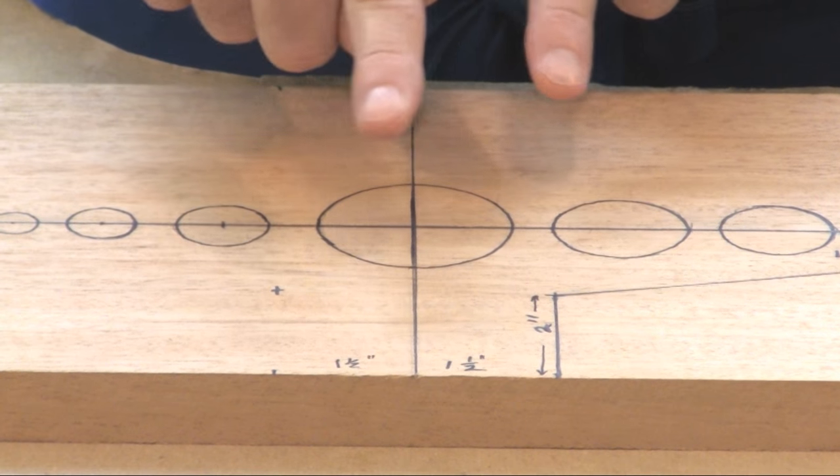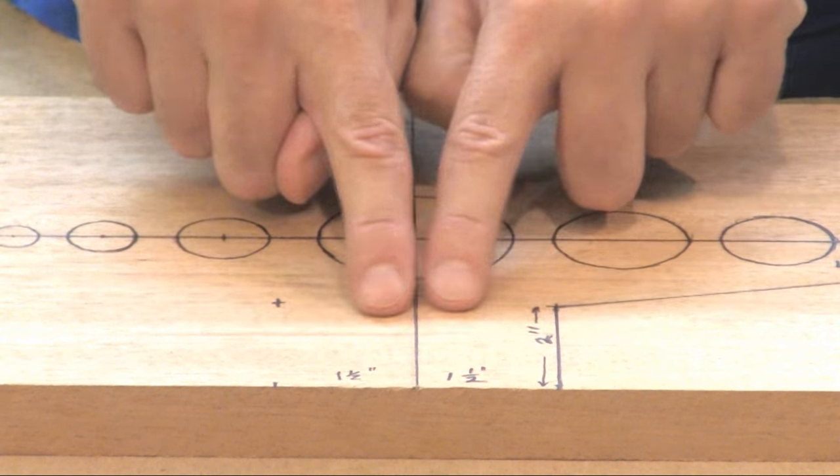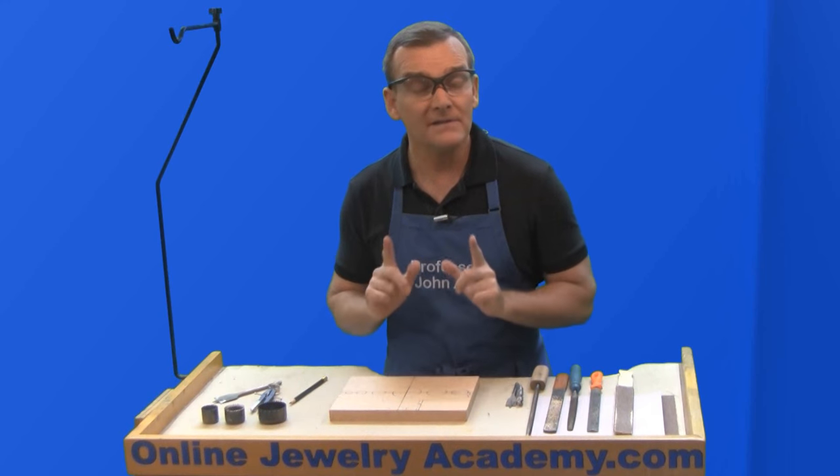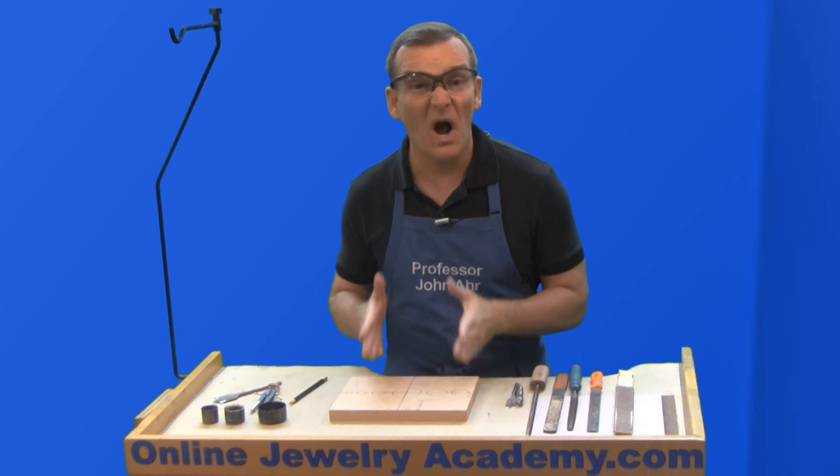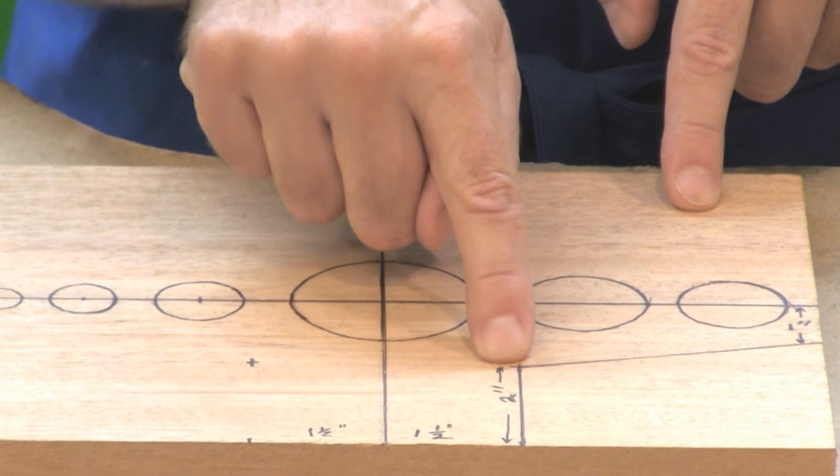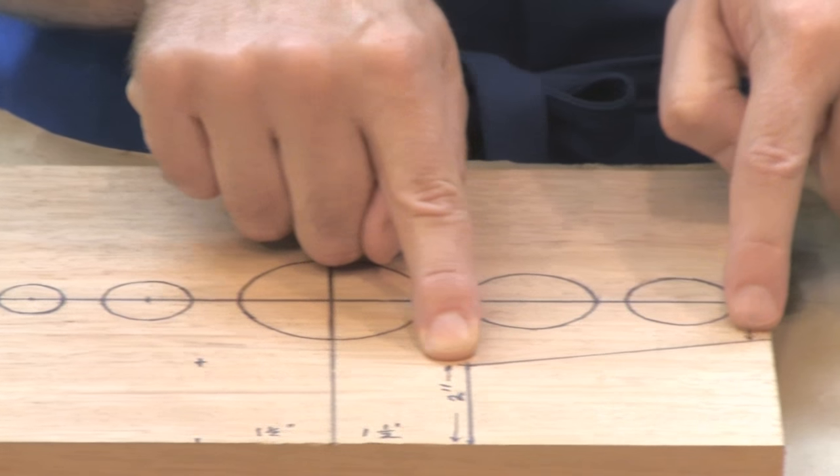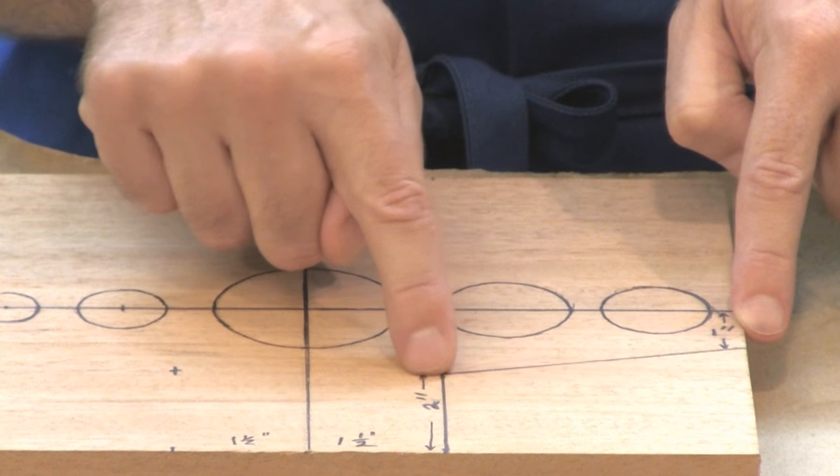I've also measured from the center line out one and a half inches on either side. That's because I have a three inch vise that this has to fit into. I want to know where it's going to sit. And I've come up two inches from the bottom and one inch below this center line here and connected the two.